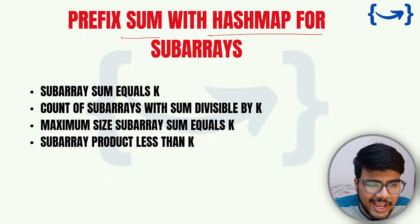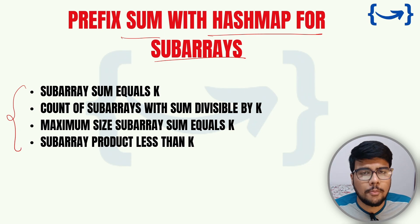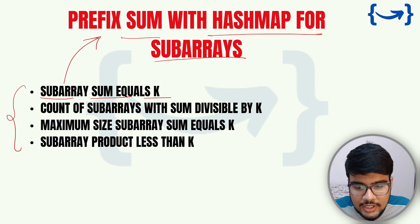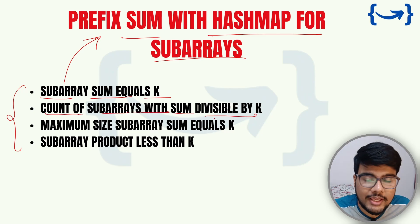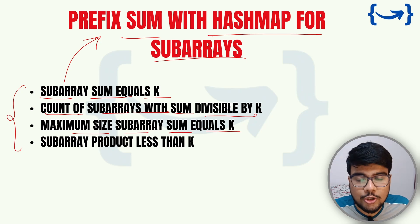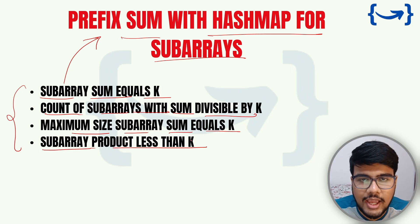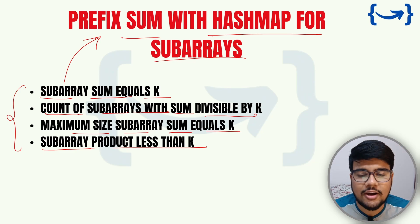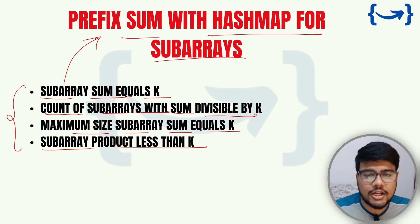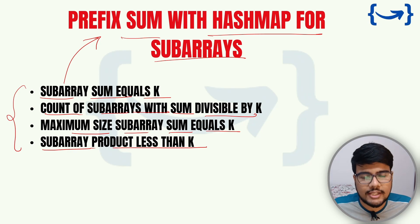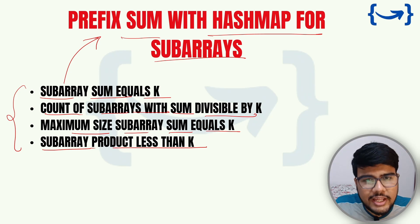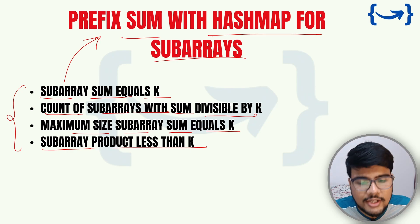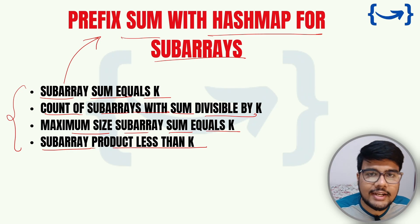Prefix sum with hash map is the next category. The four sets of problems in this subject are: sub-array sum equal to k, count of sub-arrays with sum divisible by k, maximum size sub-array sum equal to k, and sub-array product less than k. As you can see, sub-arrays appear many times. I think this will be the last video on sub-arrays covering everything. If there's enough demand in the comments for solutions, I will create them — there are around 225 questions, so it takes time, but I will put them on this channel.